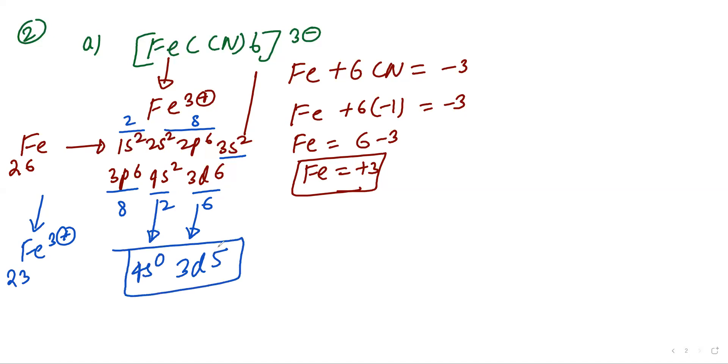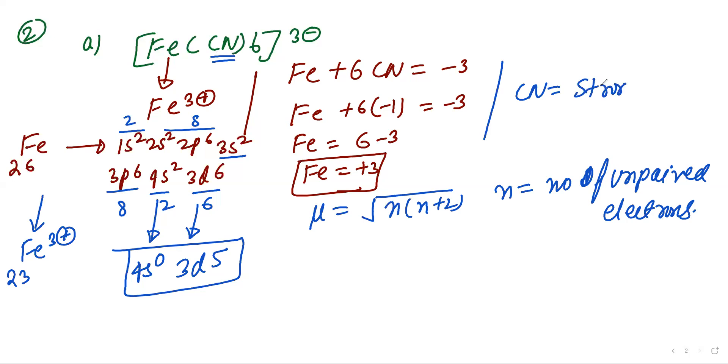How many unpaired electrons are there? For calculating Bohr magnetone, we use mu formula. Mu equals n into n plus 2, where n is number of unpaired electrons. CN is strong field ligand. So its electronic distribution will be T2G and EG. Total 5 electrons are there.